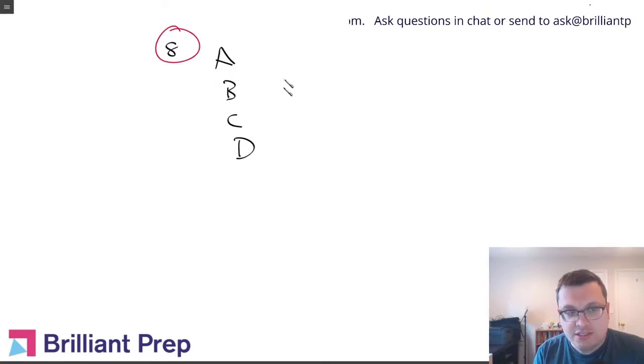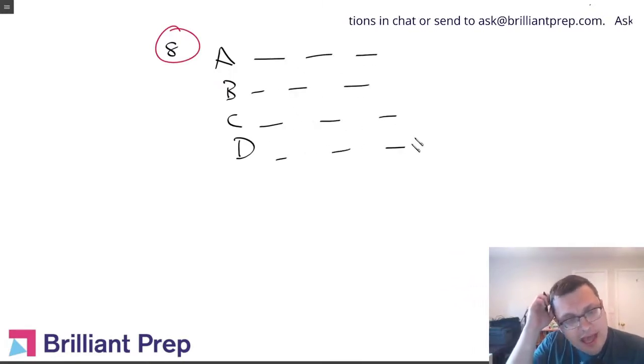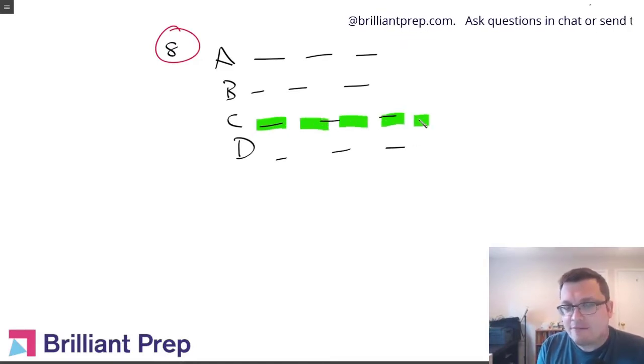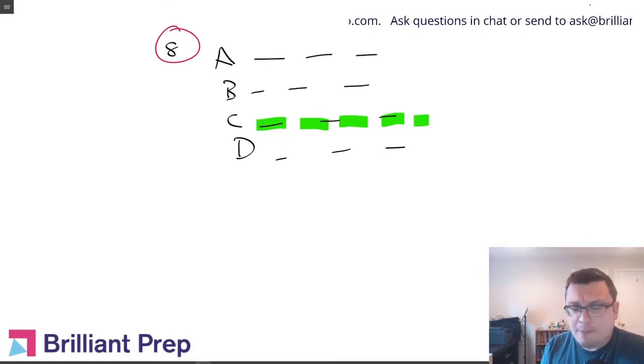So when you're evaluating your choices and you're trying to figure out what's the answer, to show that C is the answer, you have to prove that every part of C is right. It's a lot to do. That's a high bar to clear.